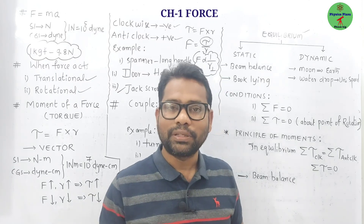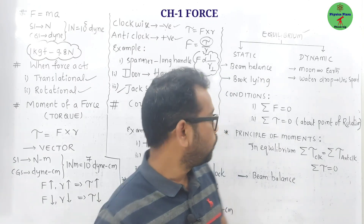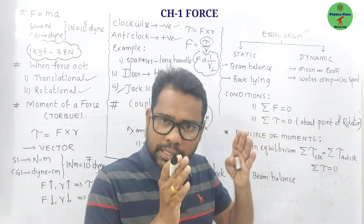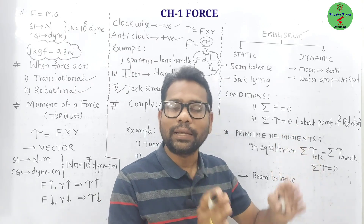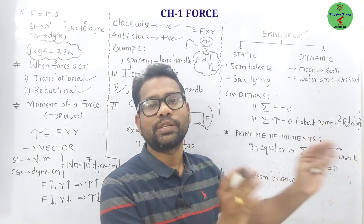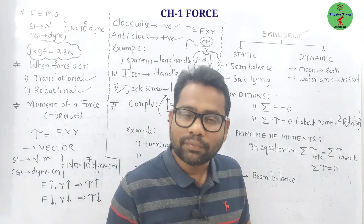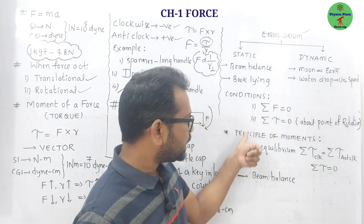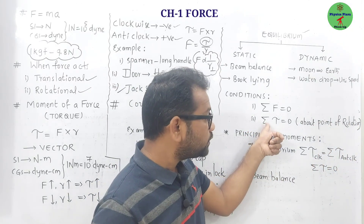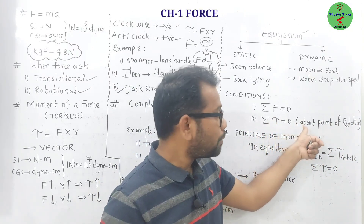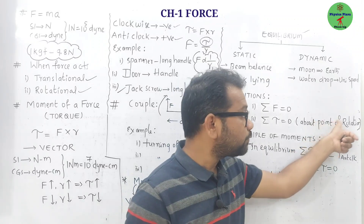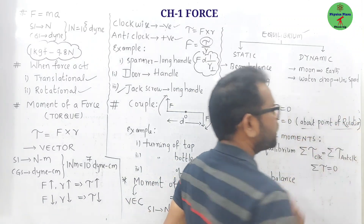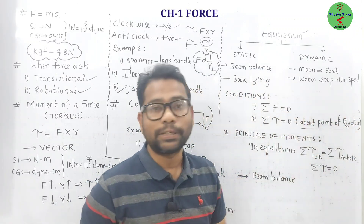From an examination point of view, the conditions for equilibrium are: First, the resultant of all forces acting on the body must be zero — that is, the algebraic sum of forces acting on the body must be zero. Second, the algebraic sum of the moments of force about the point of rotation must be zero.